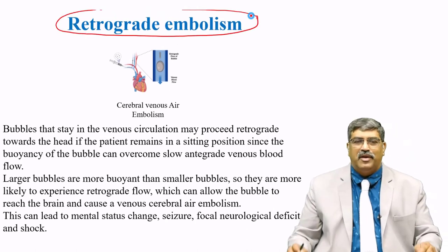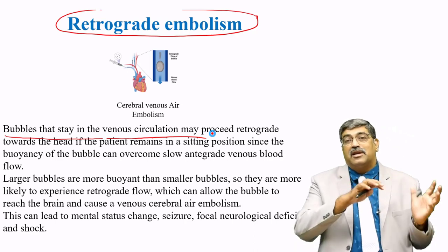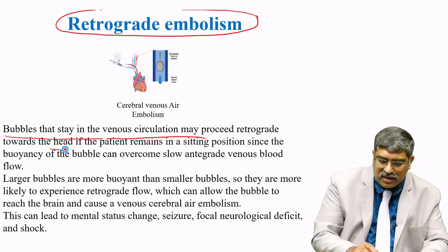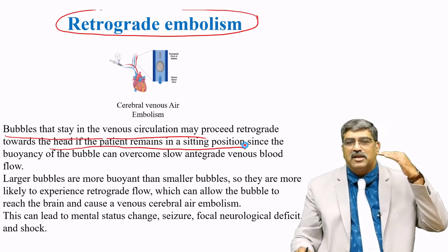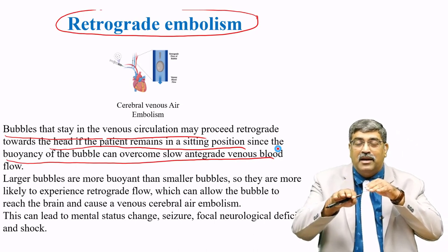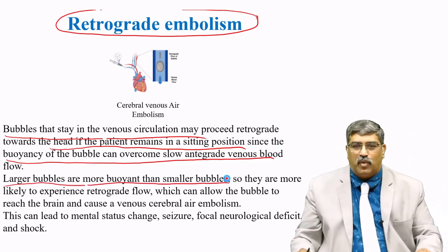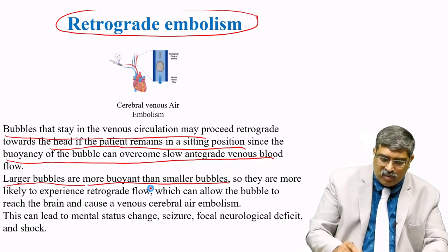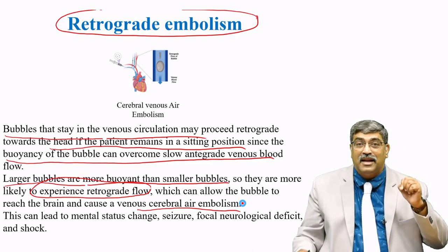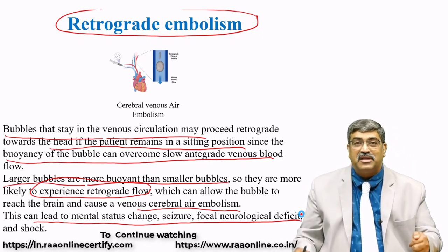What is a retrograde venous embolism? The bubble that stays in the venous circulation may proceed retrograde. Instead of coming from the IVC to the RA, it goes retrogradely towards the cerebral venous system because the patient is in a sitting position and the head is above the heart, and the buoyancy of the bubble can overcome the slow antegrade flow. The bubble flows retrograde into the cerebral circulation. Larger bubbles are more buoyant than smaller bubbles, so they are more likely to experience retrograde flow and cause venous cerebral air embolism, which is really bad. This cerebral embolism can lead to mental status changes, seizure, focal neurologic deficit, and shock.